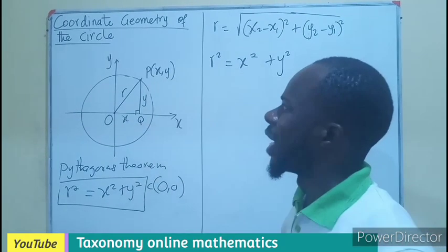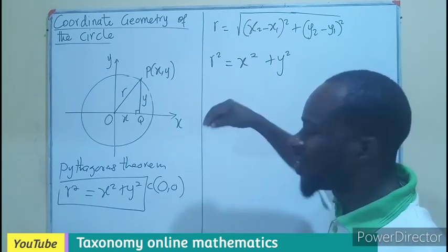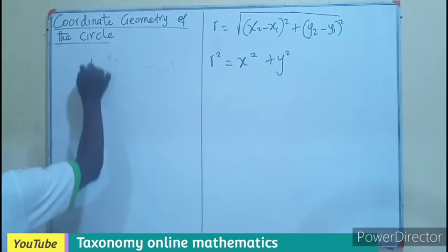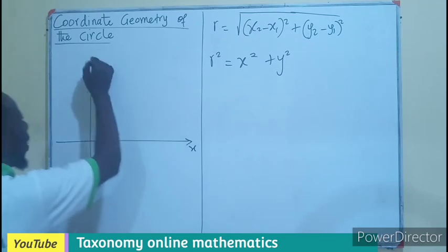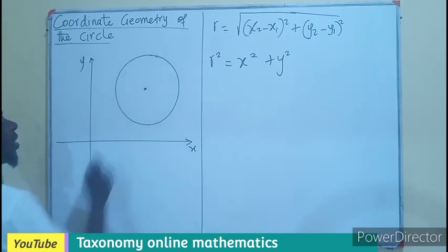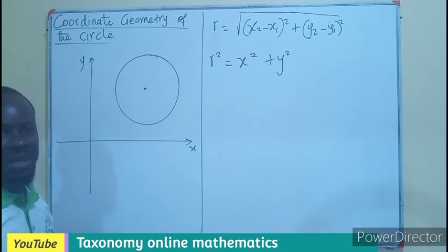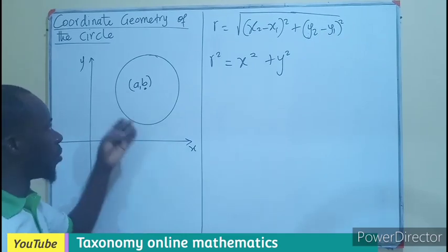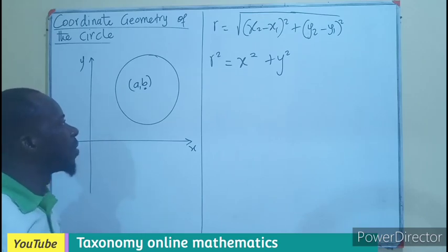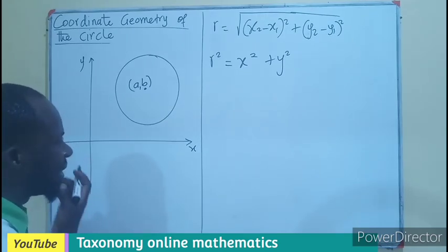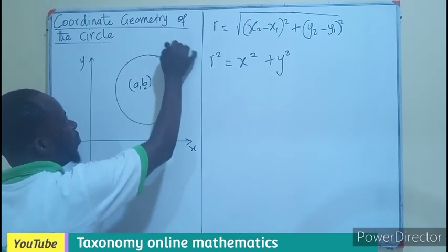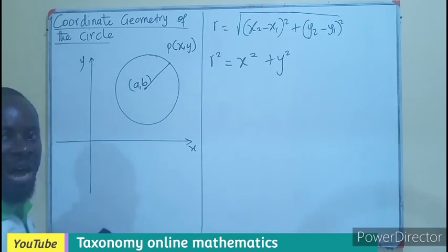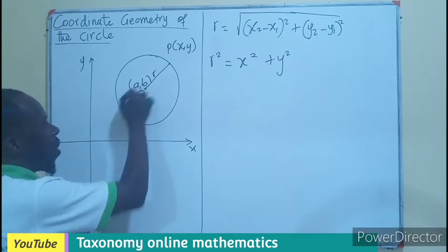When we are asked to find the equation of a circle whose center is not at the origin, the previous formula cannot work directly. In this case the center has a value other than zero — it could be (a, b), either positive or negative. We can still find any point P with coordinates (x, y) on the circle, and joining the center to P still gives us the radius r.